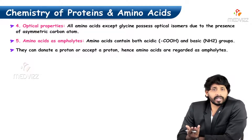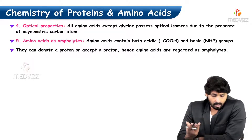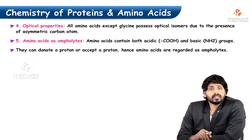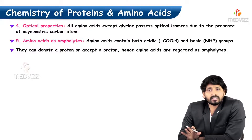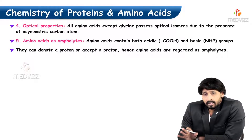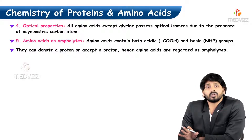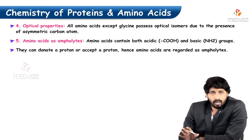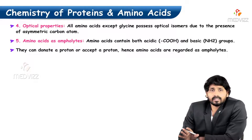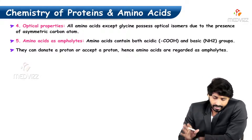Coming to the optical properties, all amino acids except glycine — that is, all 19 remaining amino acids — show optical properties. Glycine does not show optical property because it doesn't carry any asymmetric carbon. That is why glycine is optically inactive.